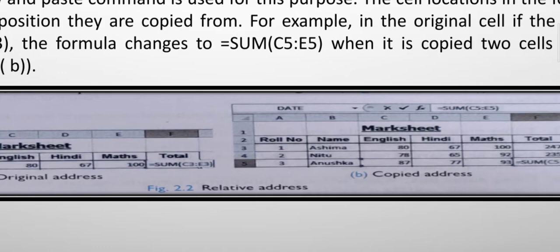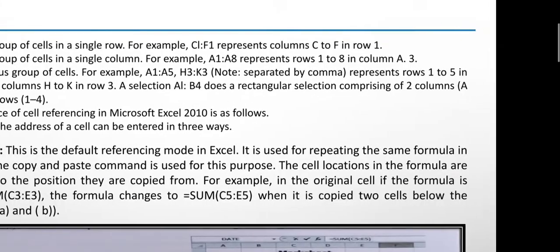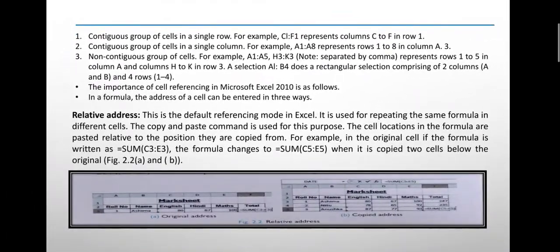Here you can see the picture. A1 to B1 means roll number and name columns are covered. A1 to B4 does a rectangle section comprising of two columns A and B and four rows 1 to 4.